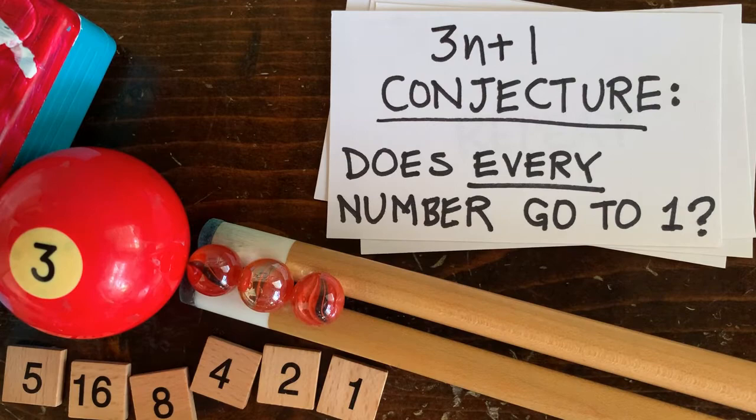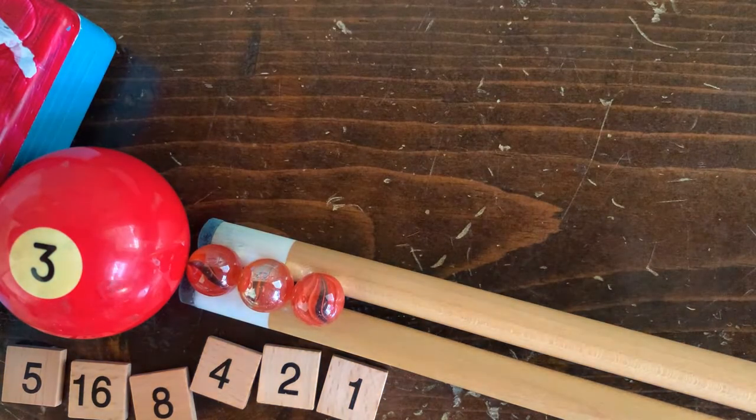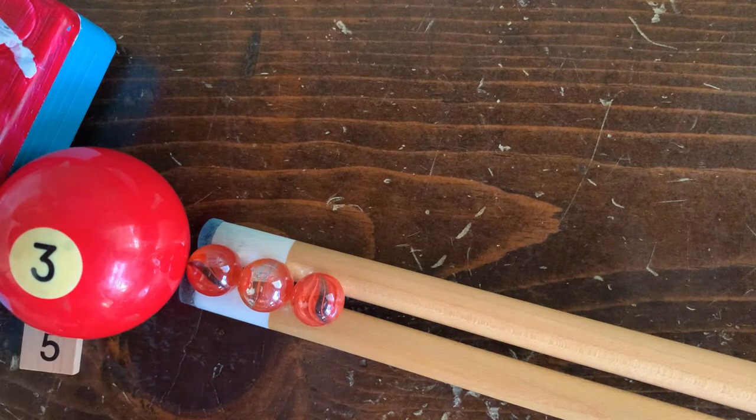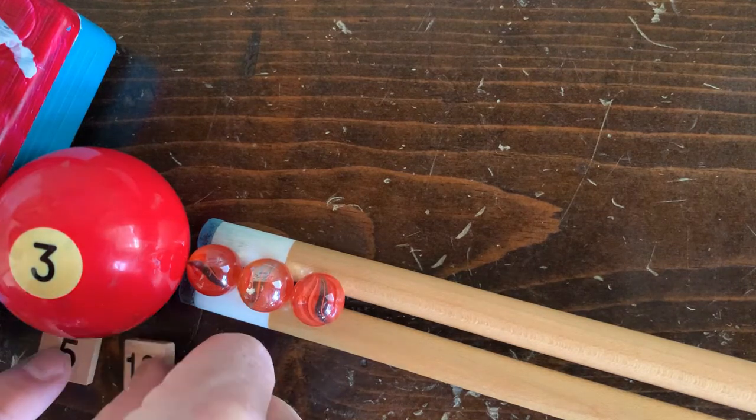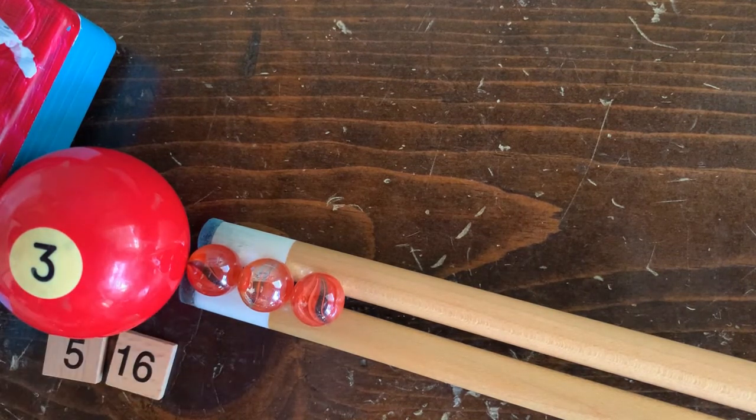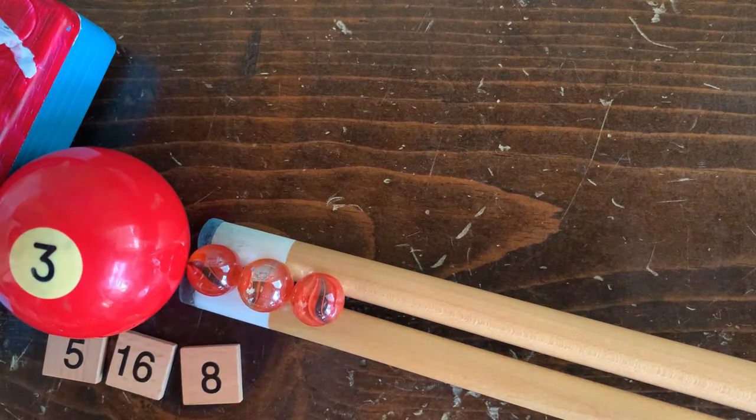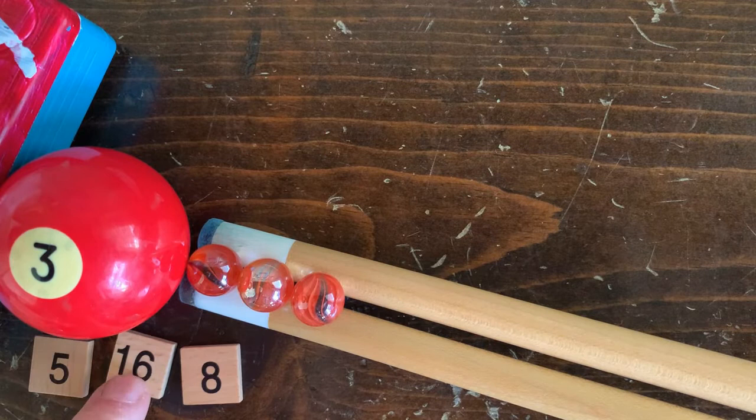Before that, let's streamline things a little bit. Whenever we run into an odd number like 5 and do 3n plus 1, notice that we always get an even number next, which we always immediately cut in half. So 5 to 16 and immediately to 8. So from now on, let's cut out the middleman and go directly from 5 to 8.